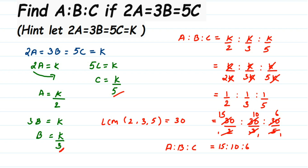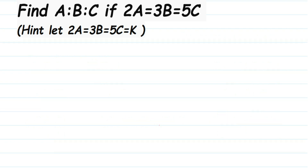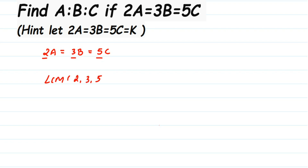That's it — that's one way of doing it, though it is a bit lengthy. Now the other way is without taking K. We have 2A equals 3B equals 5C. I'm going to find the LCM of 2, 3, and 5 the same way as before — LCM of 2, 3, and 5 equals 30. So 30 is a common factor, meaning I'll equate 2A to 30, 3B to 30, and 5C to 30.